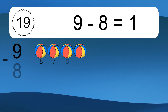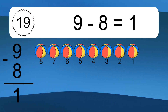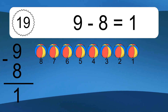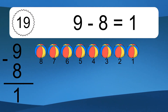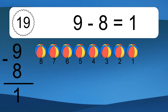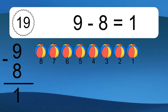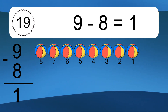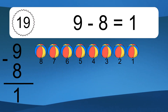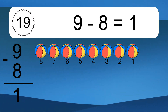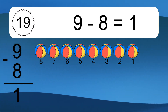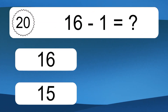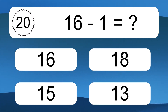9 minus 8 equals 1. Let's count it: 8, 7, 6, 5, 4, 3, 2, 1. 16 minus 1 equals what?